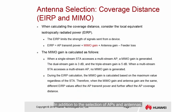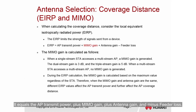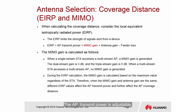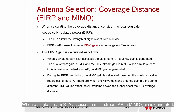In addition to the selection of APs and antennas, you also need to understand the concept of EIRP. EIRP is the strength of signals sent from an AP. It equals the AP transmit power plus MIMO gain plus antenna gain minus feeder loss. The EIRP value varies according to local laws and regulations, so the AP transmit power and coverage distance may differ. The AP transmit power is adjustable, and MIMO gain is determined by both the AP and STA. When a single-stream STA accesses a multi-stream AP, a MIMO gain is generated: the dual-stream gain is 3 dB and the triple-stream gain is 5 dB.